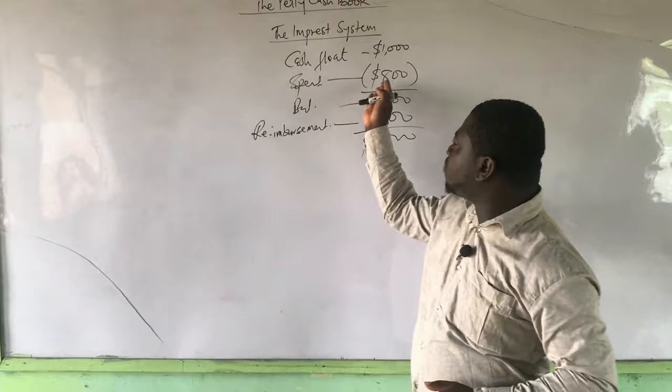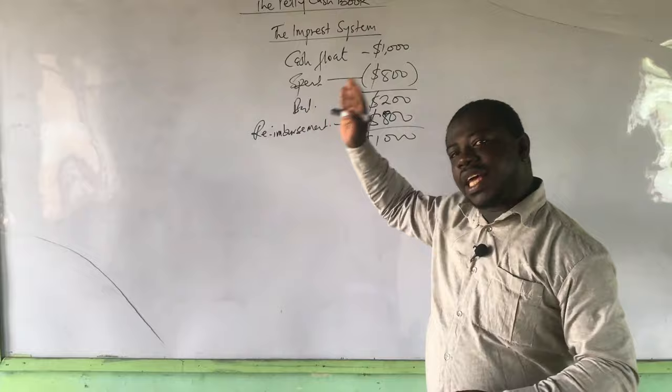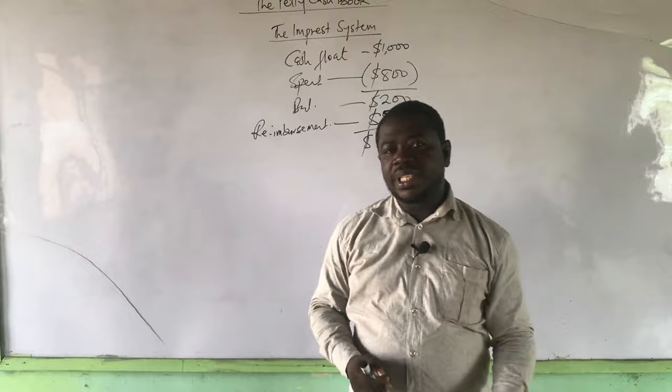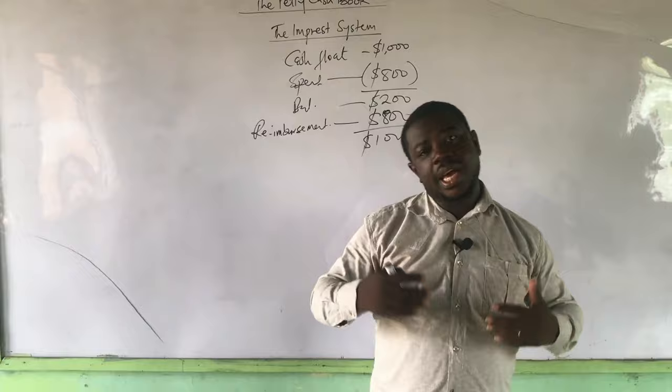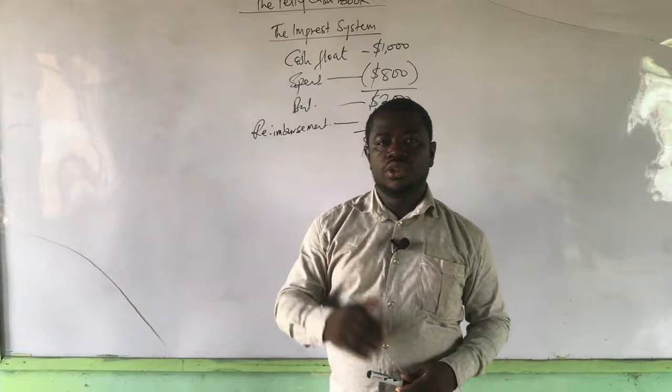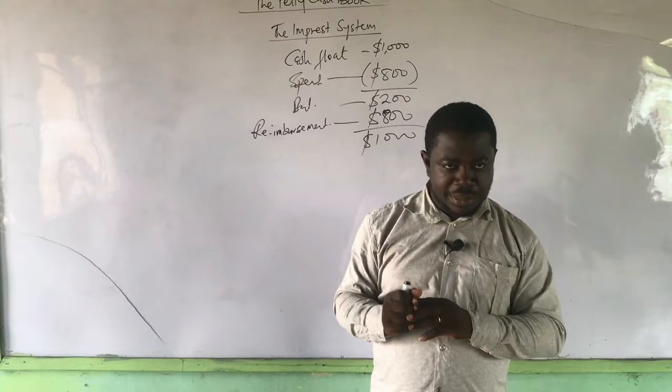This cycle — giving the float, spending, being reimbursed, returning to the float's value, spending again — is what we call the imprest system. The imprest system is a system used to operate the petty cash book whereby the petty cashier is given a float and is reimbursed at the end of the period, whether that is two weeks, a month, or three months, depending on the organisation's policy. At the end of whatever period is defined, reimbursement brings you back to the original float value.